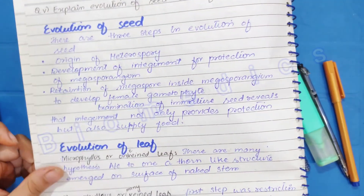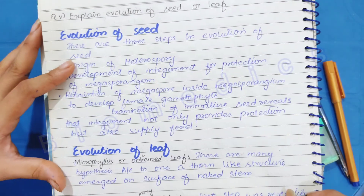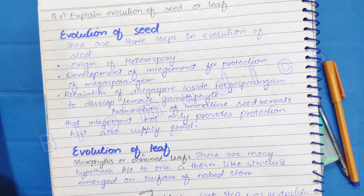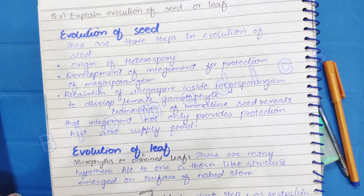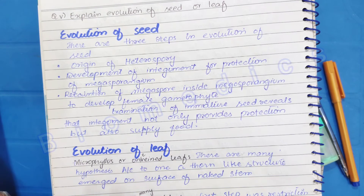After that we have a question about the evolution of seed and leaf. For the evolution of seed, there are three steps. First is heterospory — the development of different spore types. Then there is the integument, which is a structure that protects the megasporangium. What happens is the megasporangium is retained and the female gametophyte develops. When the entire seed is formed, the integument not only provides protection to the megaspore but also provides food to it.